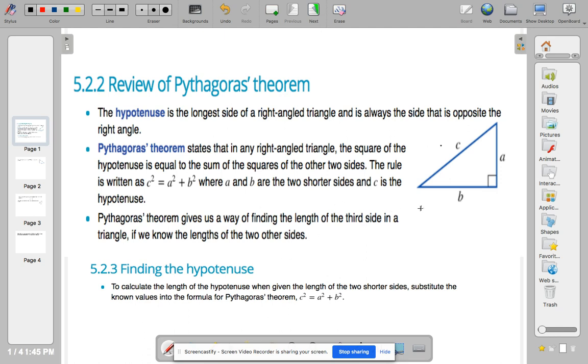Okay, let's do some work on Pythagoras' theorem. Just reviewing the labeling of right-angled triangles. We call the longest side the hypotenuse, and then we have the two shorter sides. We label hypotenuse C, and the two shorter sides A and B.